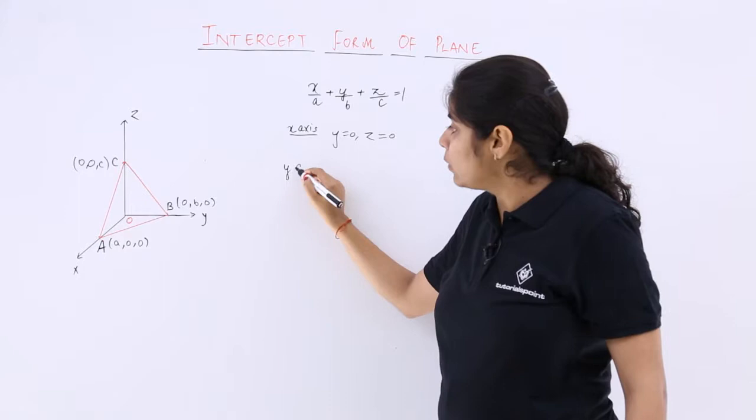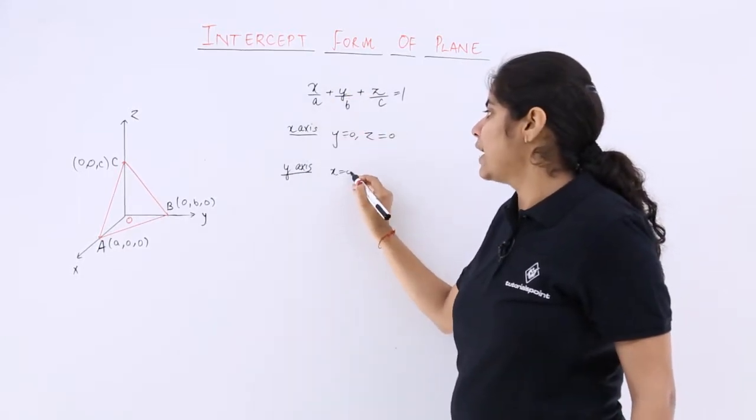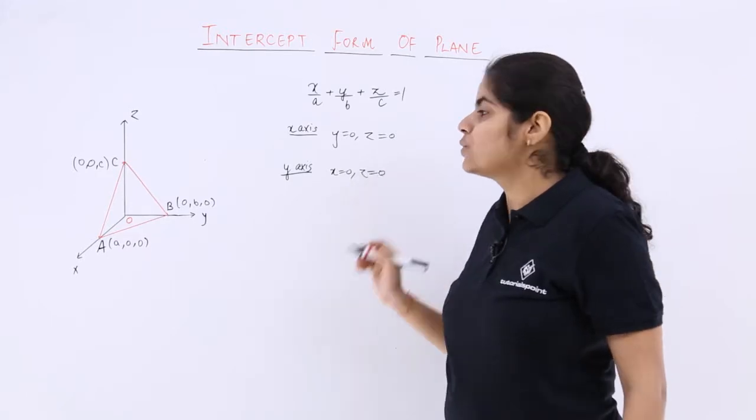For the intercept on the y-axis, put x = 0 and z = 0.